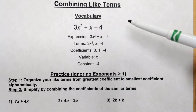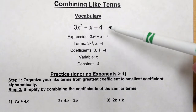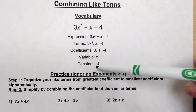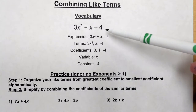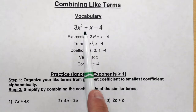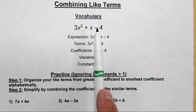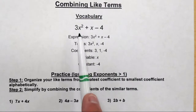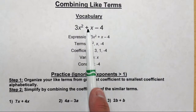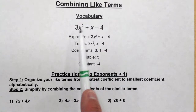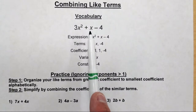So very quickly, I'm going to discuss what an expression, terms, coefficients, variables, and constants are. So I have an expression here. An expression is basically a mathematical equation that combines numbers and symbols — so mathematical symbols. We have x as a symbol, and the plus and minus are symbols. So if we combine all this together, this is an expression.